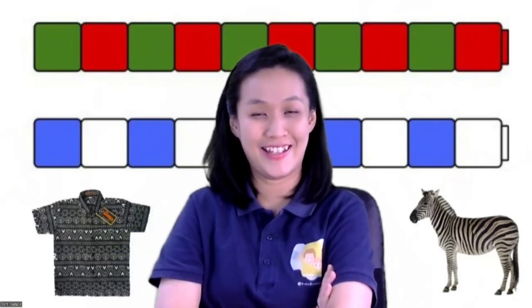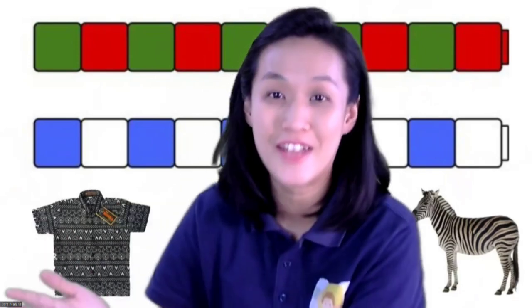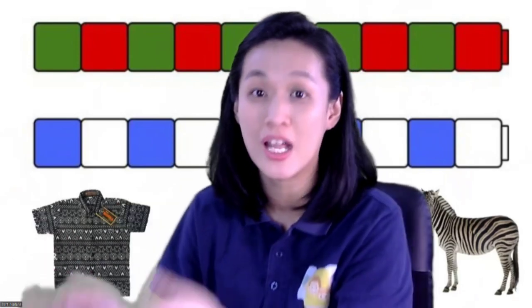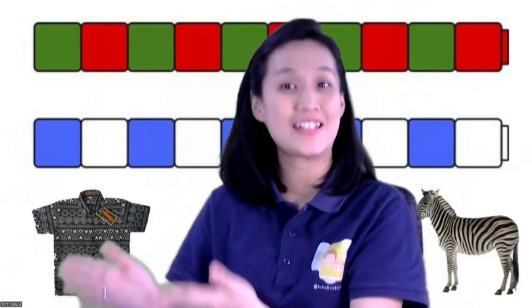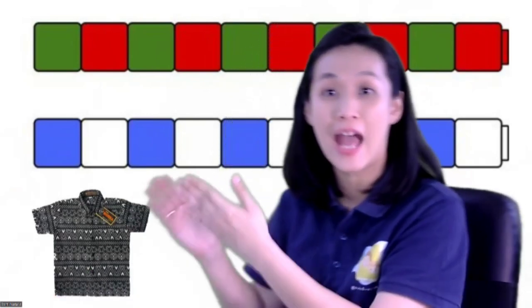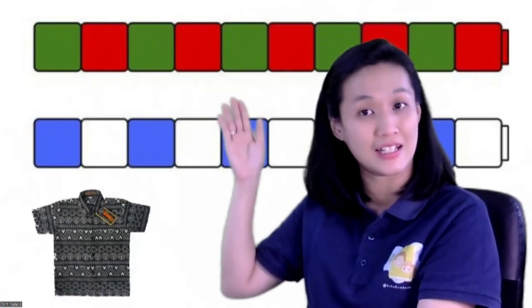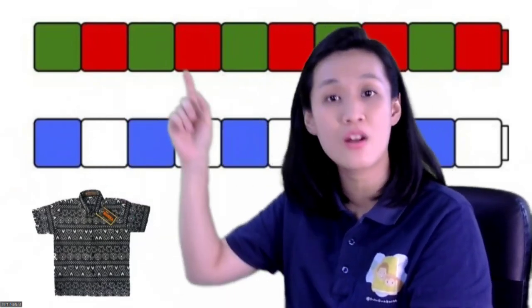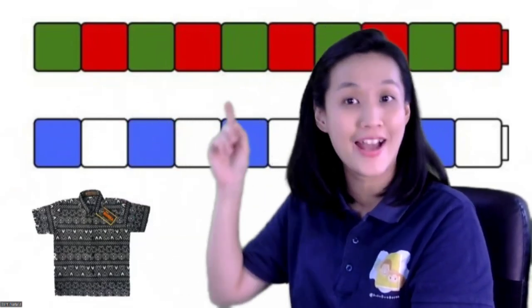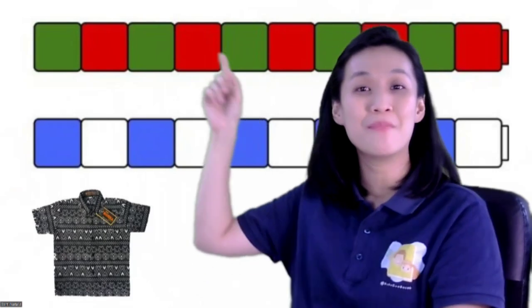Now let's check together, children, what pattern is. Pattern is something that happens continuously, repeatedly, or over and over again. Check this building block.